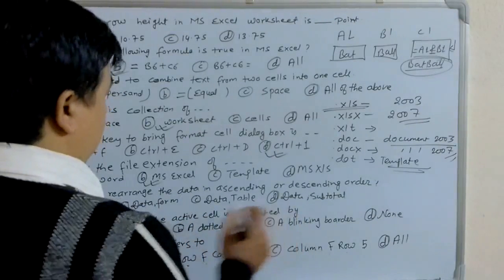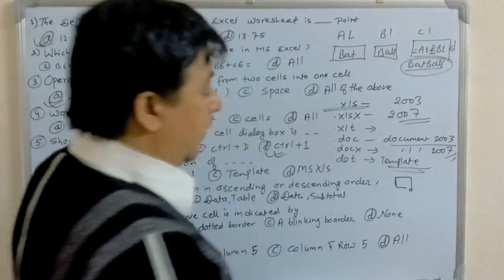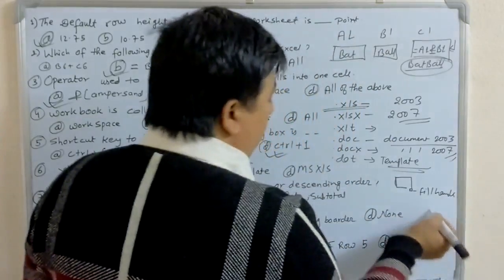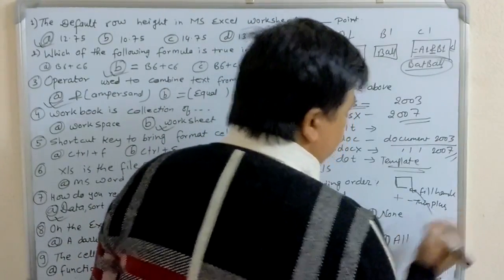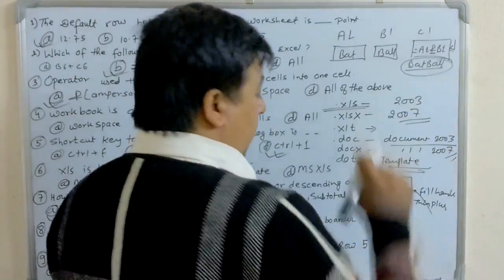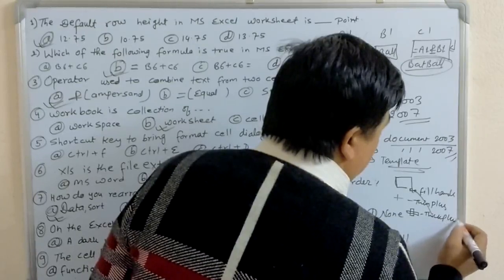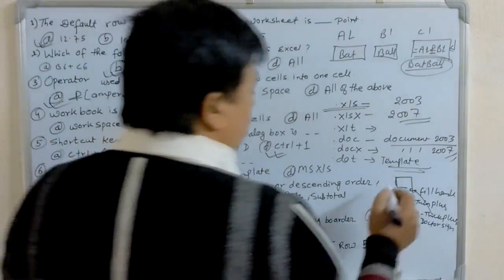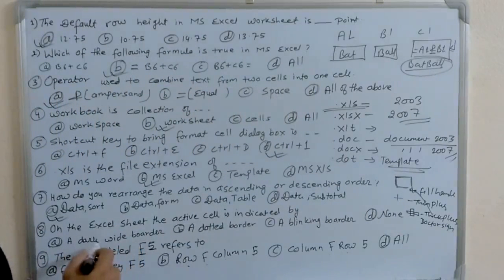On the Excel sheet, the active cell is indicated by a thick white border. The small square at the corner is known as the fill handle. When you mouse over the fill handle, you will see a small thin plus sign. When a cell is selected and you mouse over it, you will see a big plus sign, which is known as the thick plus or cross sign. So the active cell is indicated by a thick white border.